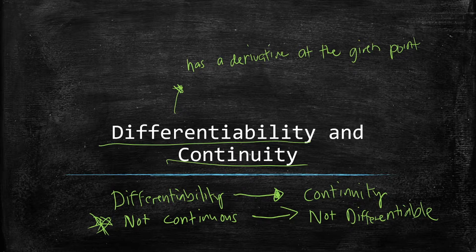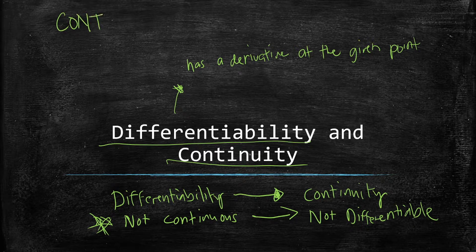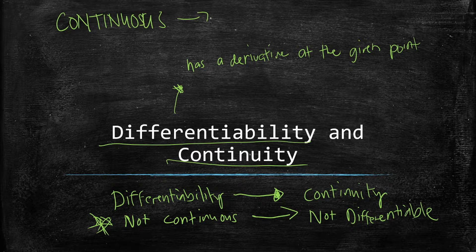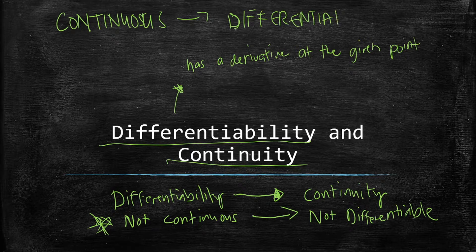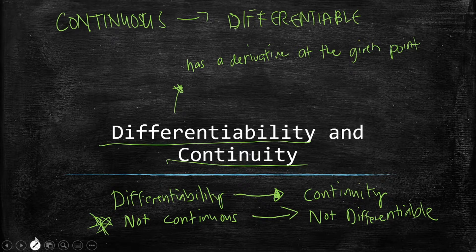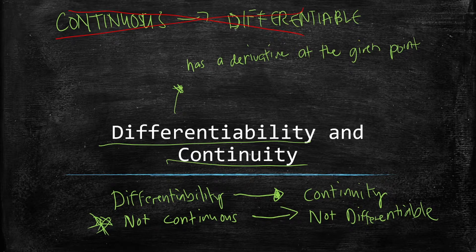However, be careful — it does not mean that if a function is continuous, it is automatically differentiable. There are some functions which are continuous but not differentiable. These two statements are true: differentiability implies continuity, and not continuous implies not differentiable. But continuity does NOT imply differentiability.